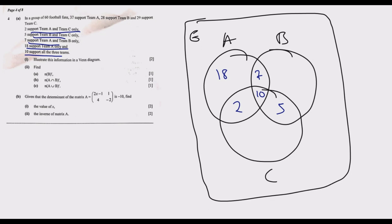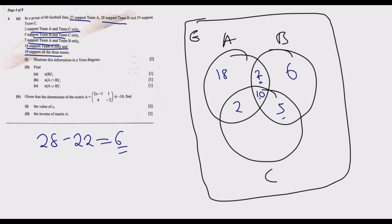We can verify: the total supporting Team A should be 37. We have 18 plus 2 is 20, plus 10 is 30, plus 7 is 37 — correct. Now for Team B, the total should be 28. We have 10 plus 5 is 15, plus 7 is 22. So 28 minus 22 gives us 6. Therefore 6 fans support Team B only.